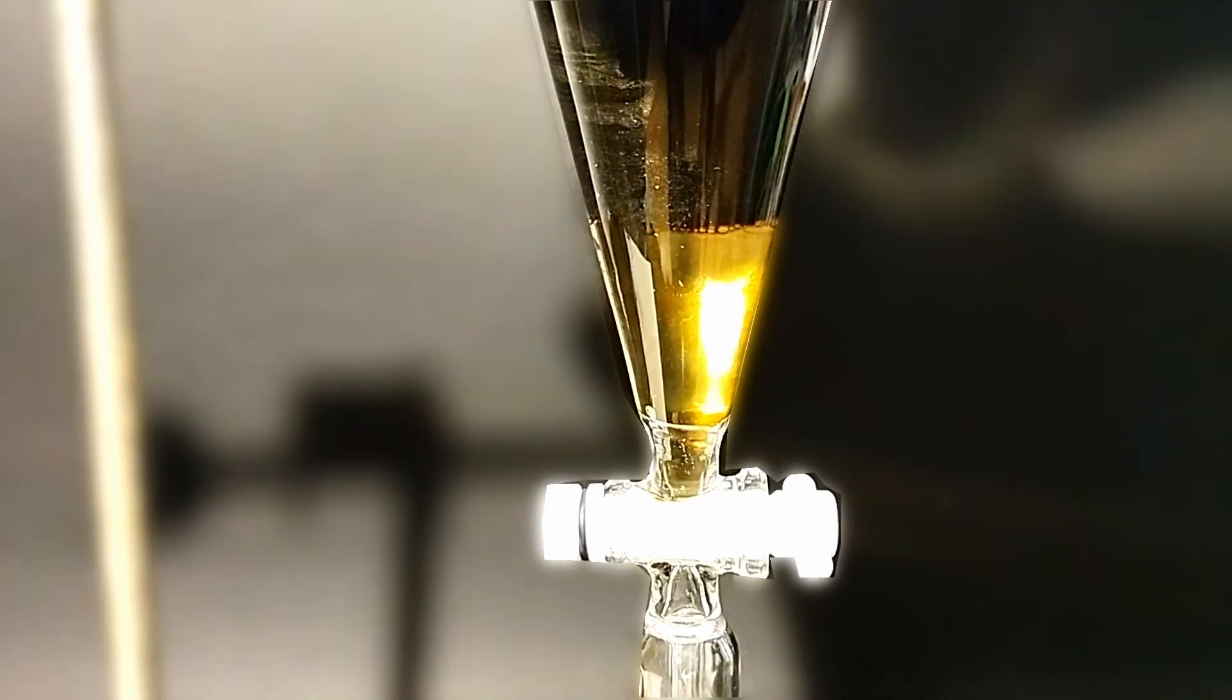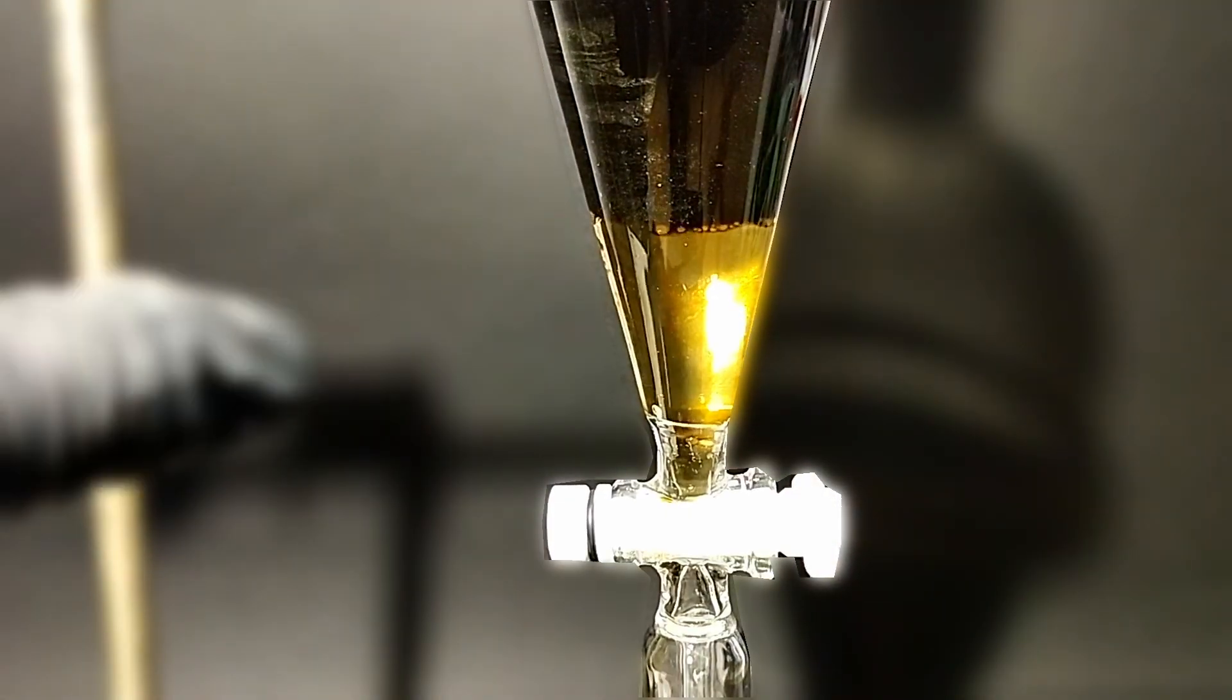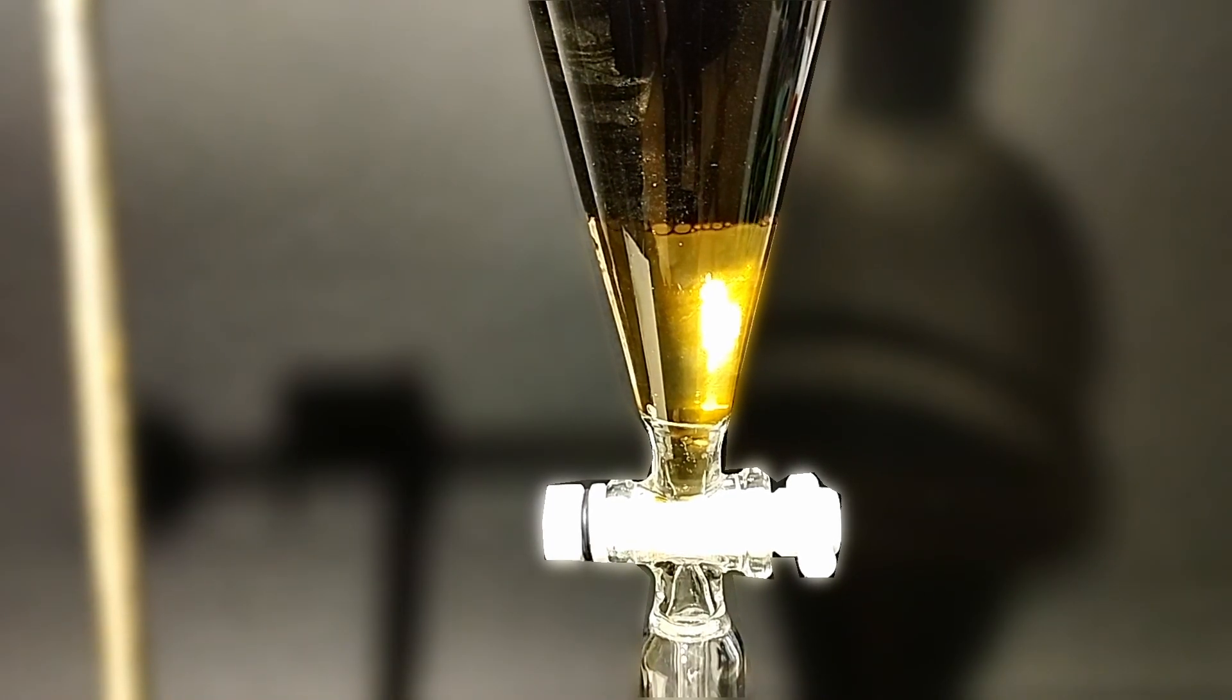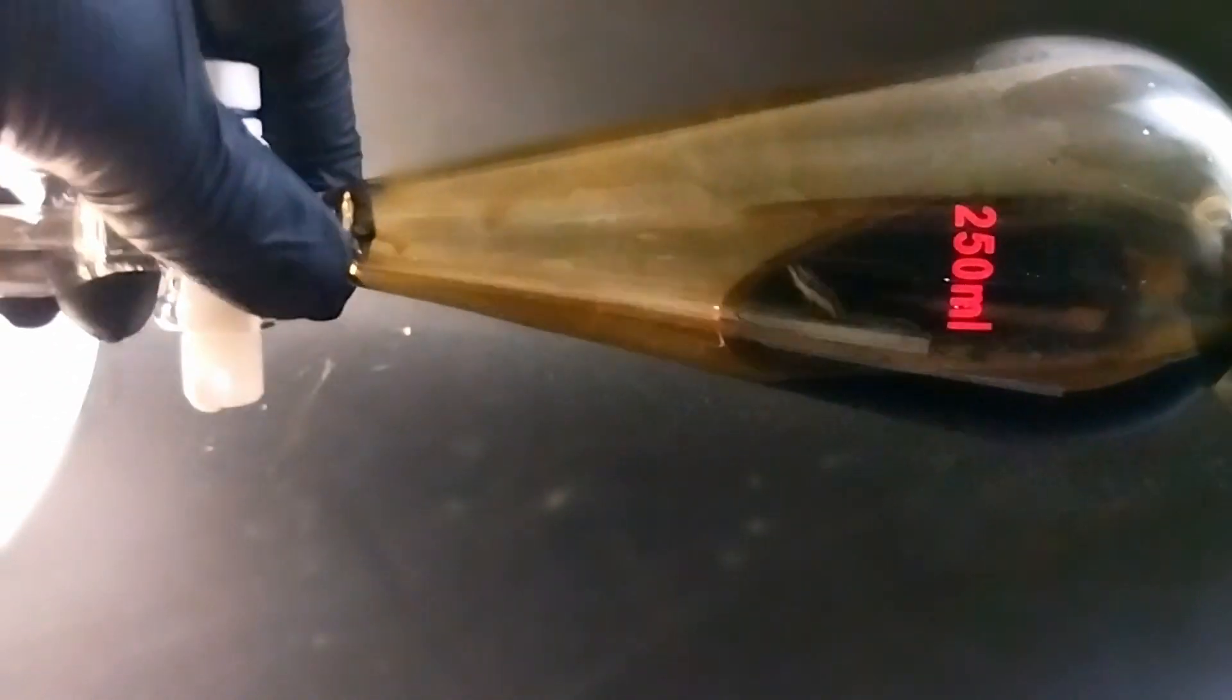You can see the layers separate at the bottom of the funnel. The yellow one is the DCM layer that has our caffeine. I very gently shake the funnel. Just remember to seal it off before you do this so it doesn't spill.